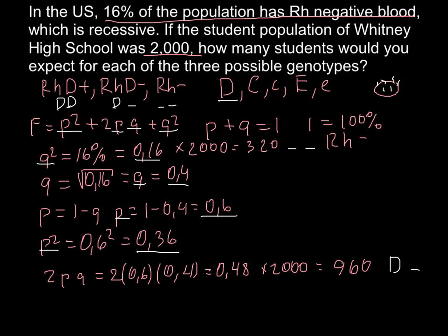And also we can find number of students, or proportion, that belong to the homozygous dominant group here. So this is p². And this is 0.36 or 36%. So when we multiply by 2,000, we are going to get 720 people who belong to the blood group genotype that is Rh positive and would belong to the genotype that is homozygous dominant.